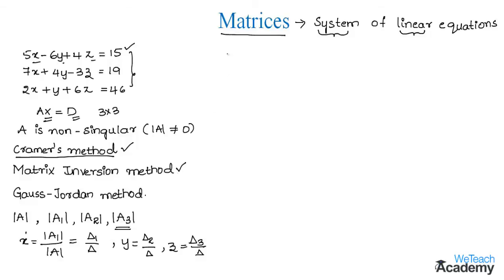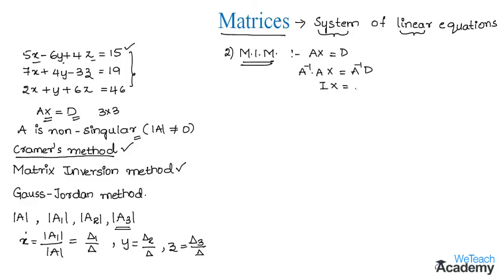Coming to the next method — matrix inversion method. We check that A is non-singular, and then for the matrix equation AX = D, we pre-multiply both sides by A inverse, giving A inverse times A times X equals A inverse times D. Since A inverse times A equals the identity matrix I, we get I times X equals A inverse times D, which simplifies to X equals A inverse times D.